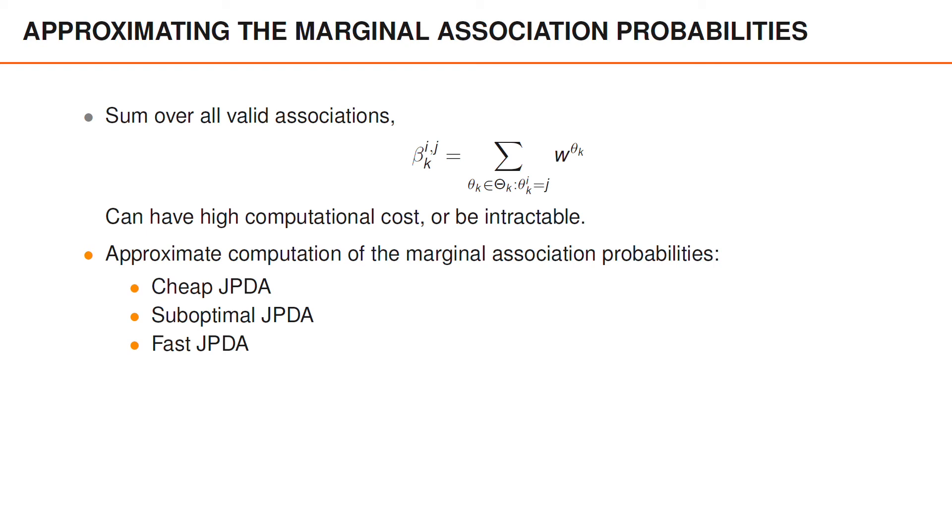For example, there are the methods called cheap JPDA, suboptimal JPDA, and fast JPDA. It goes beyond the scope of this course to explain these different methods, but if you're interested, you can look into them.